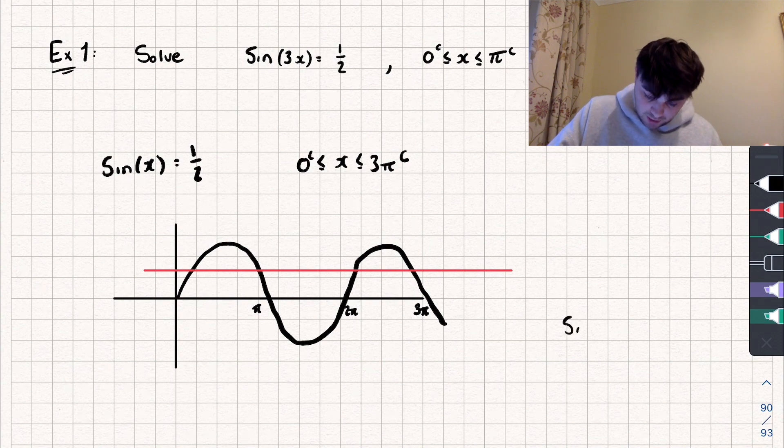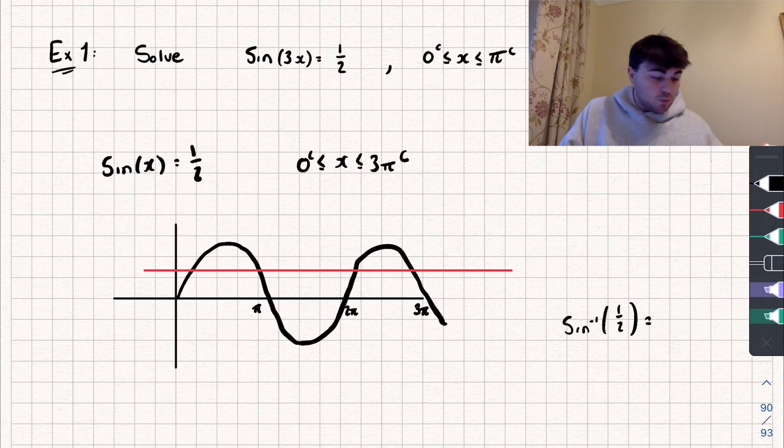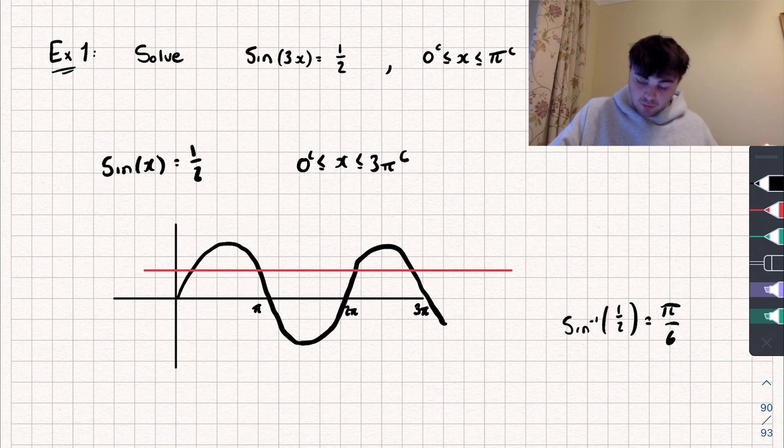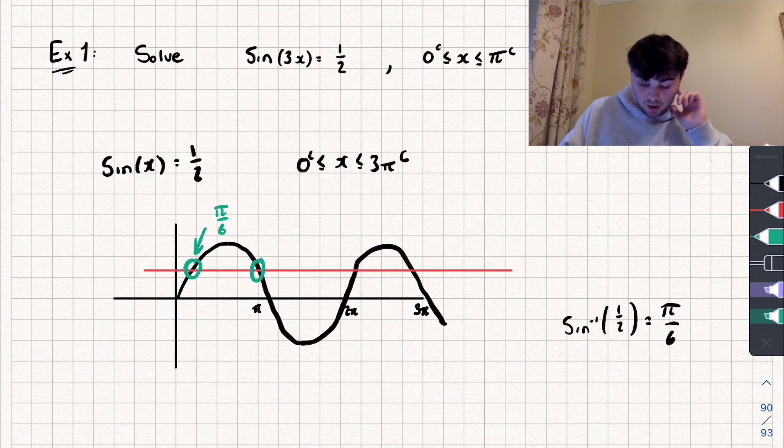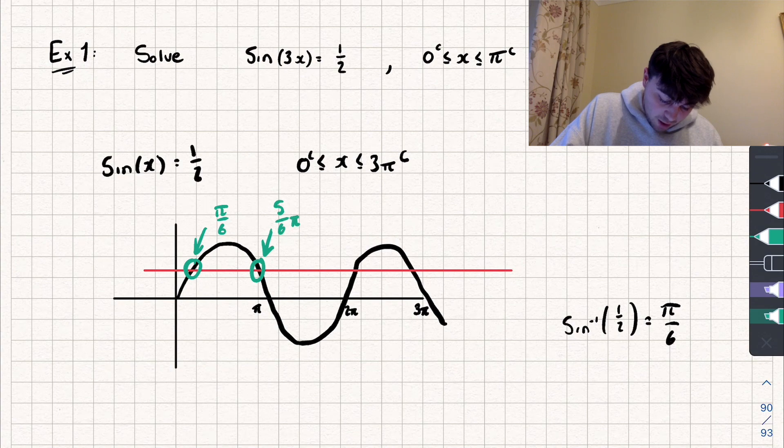So to find the first solution, I could just calculate inverse sine of 1 half. And if I were to do that on my calculator, because I'm working in radians, so inverse sine of 1 half, I get that it's equal to pi by 6 radians. So this first solution is going to be pi by 6 radians. To find this second solution, I could use the symmetry of the graph and say that, well, I could start at pi and move back pi by 6, and that takes me to there, so that's going to be 5 over 6 pi radians.